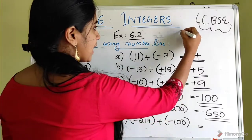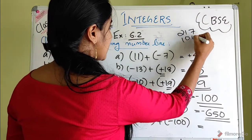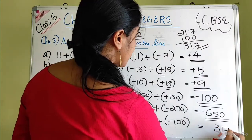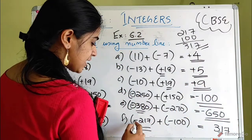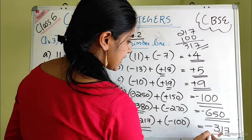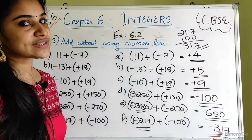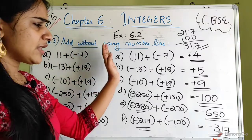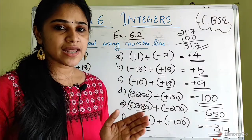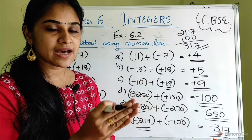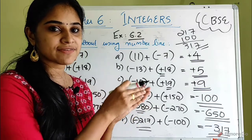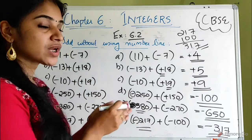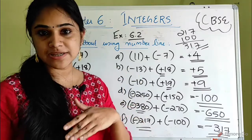Minus 217 plus minus 100. Same sign, so we do addition. The answer is negative. 2 plus 1 is 3, so remember: same sign means you add the numbers and keep the same sign.